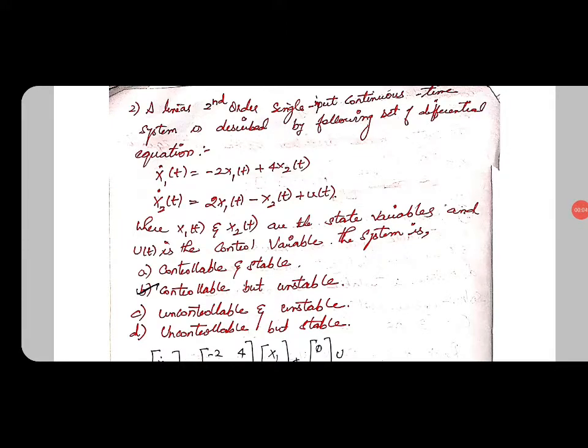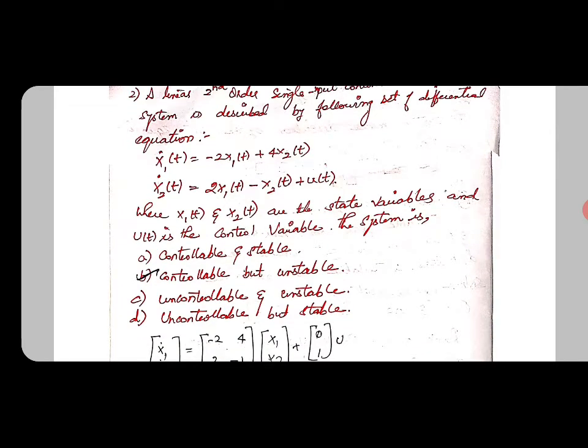A linear second-order single input continuous time system is described by the following set of differential equations: x1(t) = -2x1(t) + 4x2(t) and x2(t) = 2x1(t) - x2(t) + u(t), where x1(t) and x2(t) are the state variables and u(t) is the control variable.